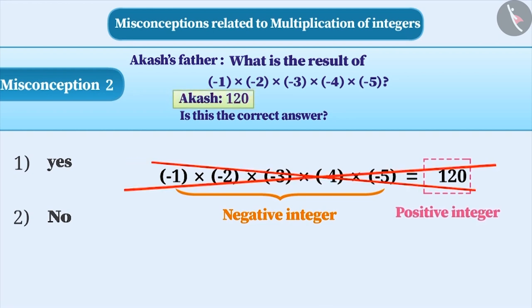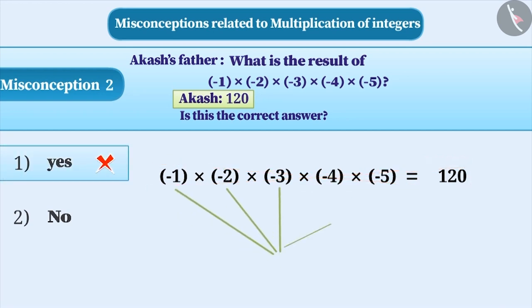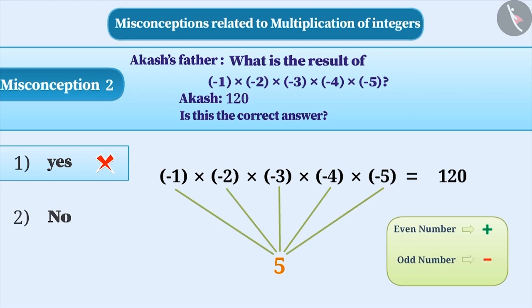But option 1 is an incorrect answer. To find the sign, we will count all the negative integers. If their number is even, then plus sign is included in the result. If it is odd, then the minus sign is included in the result.